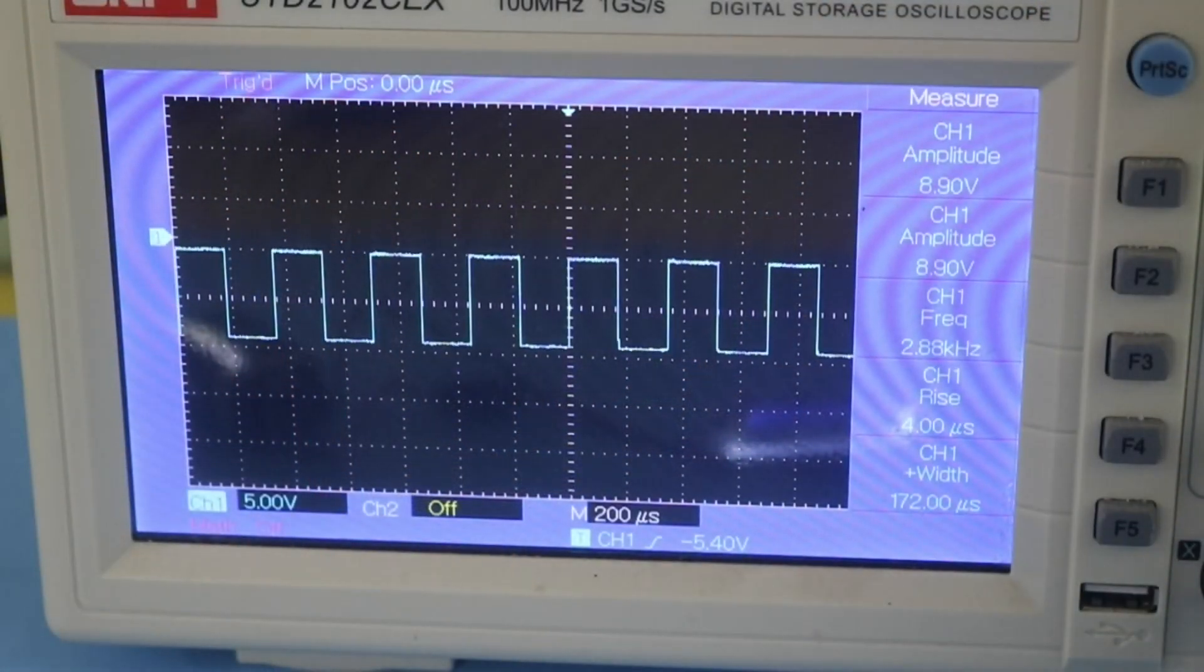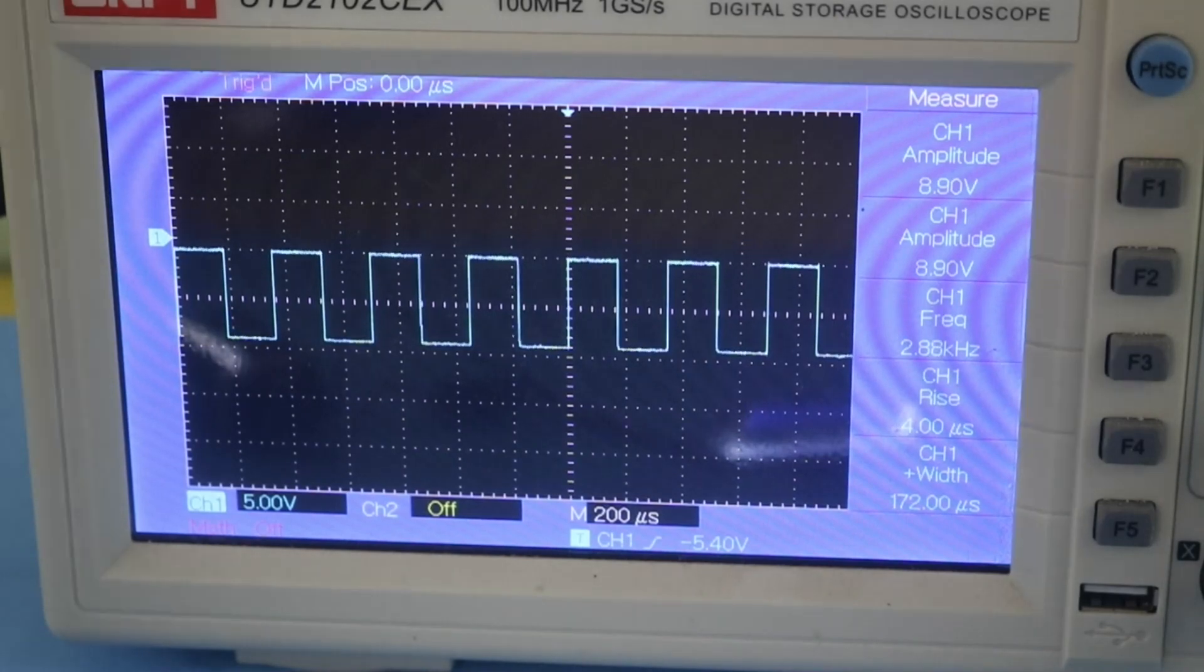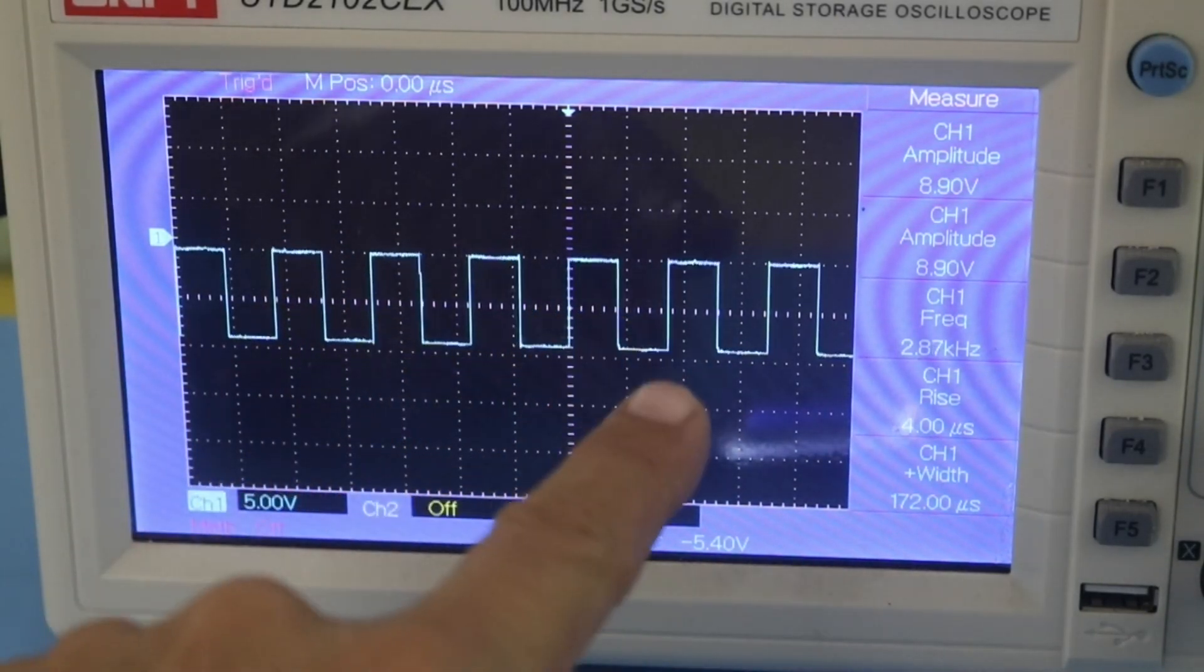Here in the oscilloscope we can see the square wave train and we will take our simple circuit and convert this square signal into a sinusoidal signal.